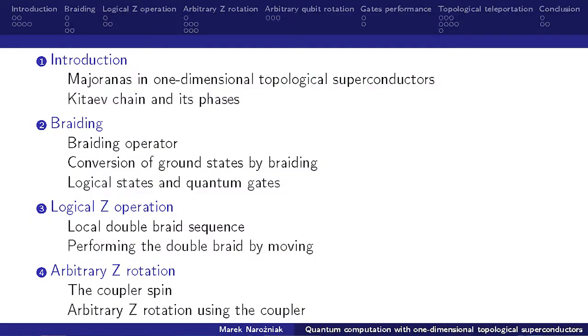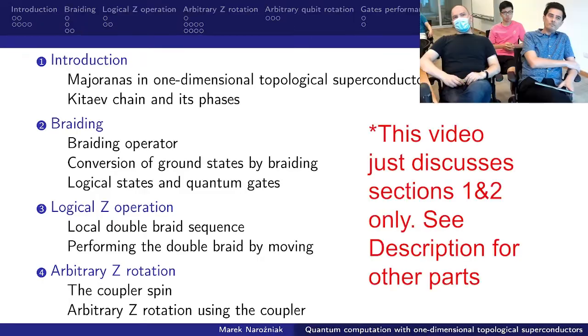I will explain Majorana operators, fermion operators, Kitayev chains. Then we will talk a bit about braiding, how to braid those states, how quantum computation in 1D works and how it's expressed using braids. And after that, we are going to introduce a series of quantum gates.